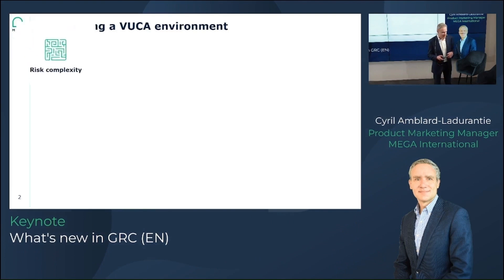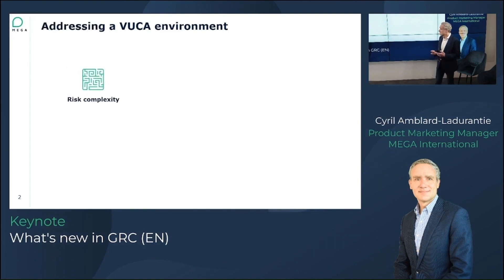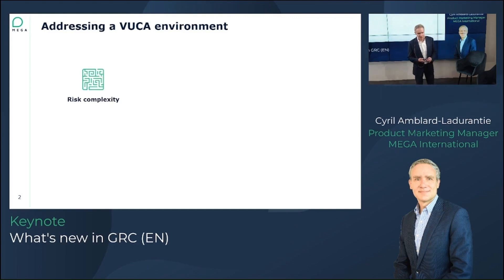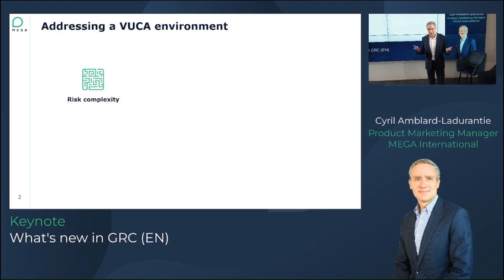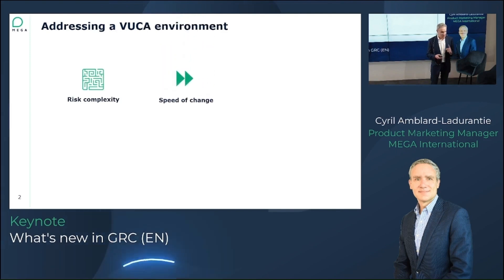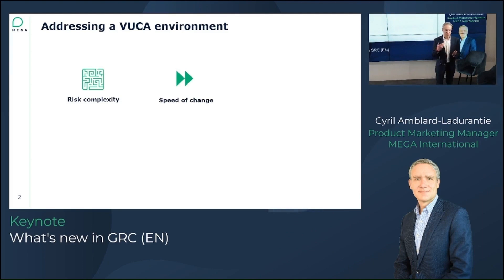There are a few things that characterize this VUCA environment. First, what we call risk complexity. There are lots of risks: cybersecurity risks, health and safety risks, geopolitical risks, weather risks, ESG risks — you name it. There is a lot of risk complexity to manage on a daily basis. And those risks are coming very quickly now — the way a risk happens and impacts your organization can go very, very quickly.